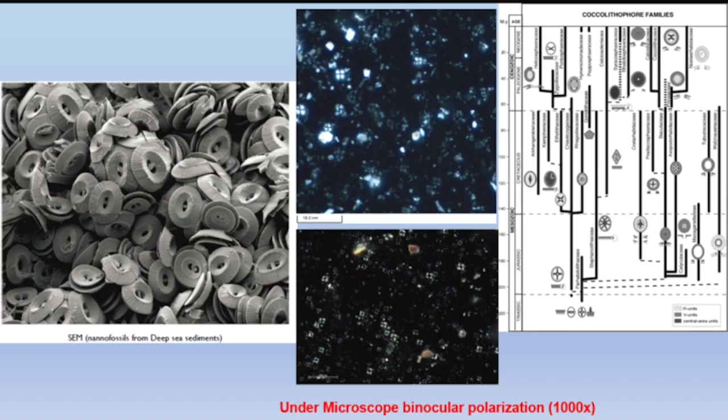Di bawah sebelah kiri adalah di bawah spektrum elektromagnetik untuk yang deep sea sediment dari Ocean Drilling Program. Kemudian yang di sebelah tengah adalah kalau kita lihat di bawah mikroskop dengan perbesaran seribu kali. Dan yang sebelah kanan, ini adalah gambaran umum untuk family daripada coccolith nanofosil itu sendiri, dari mulai Triasik sampai dengan recent. Bisa dilihat perbedaannya sangat mencolok; biasanya semakin tua umurnya dia relatif lebih besar, dan semakin muda dia akan relatif lebih kecil, karena itu dipengaruhi oleh nutrisi dan juga seawater condition yang sangat berhubungan dengan climate change dan juga paleoceanography.